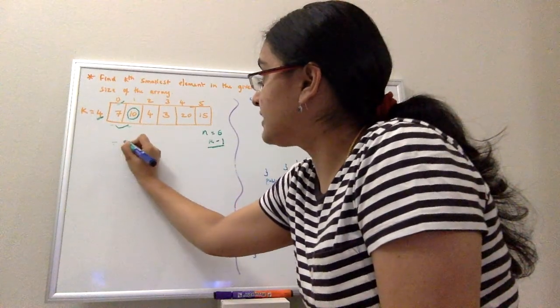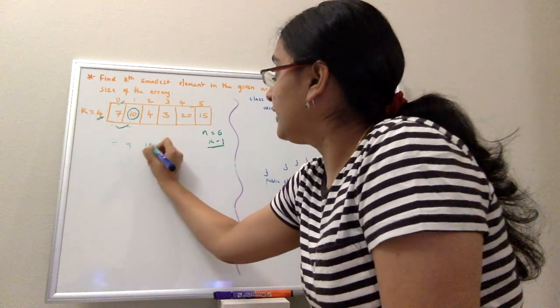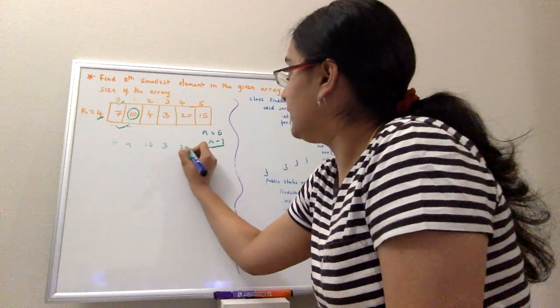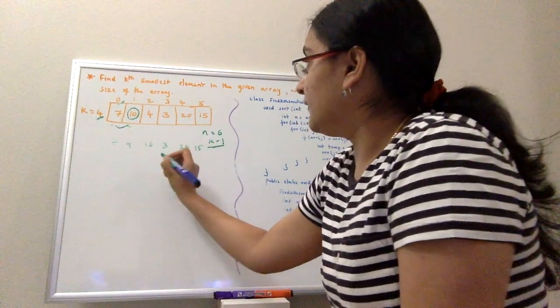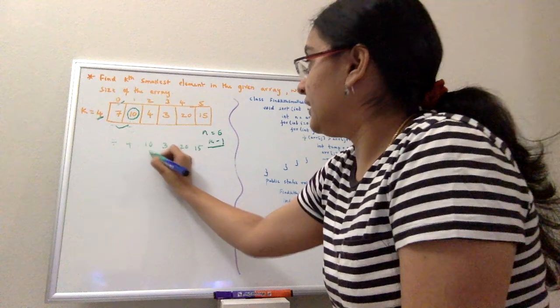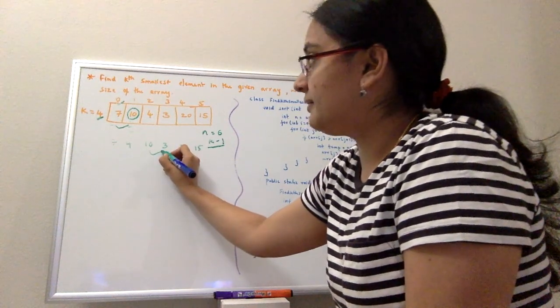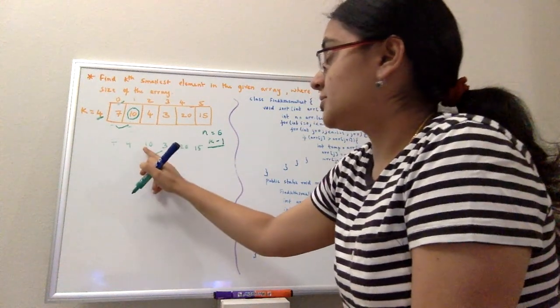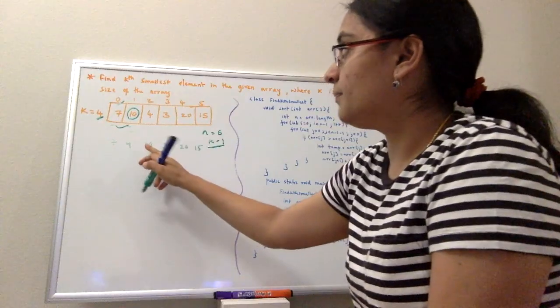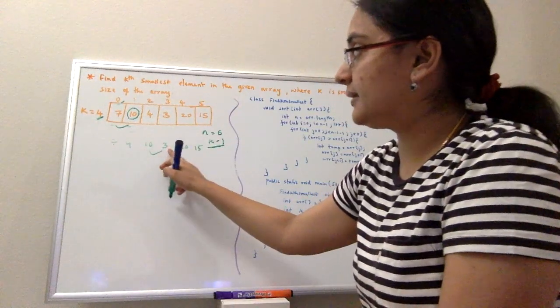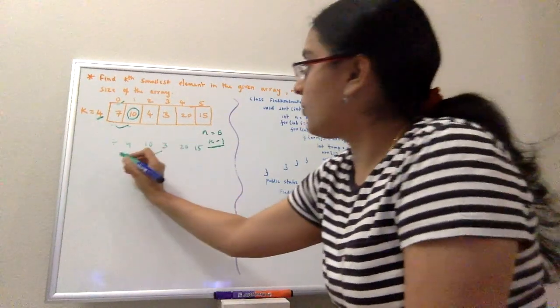So my array will be 7, 4, 10, 3, 20, and 15. Then I'll check 10 and 3. Because 10 is greater than 3, I'll swap it again.